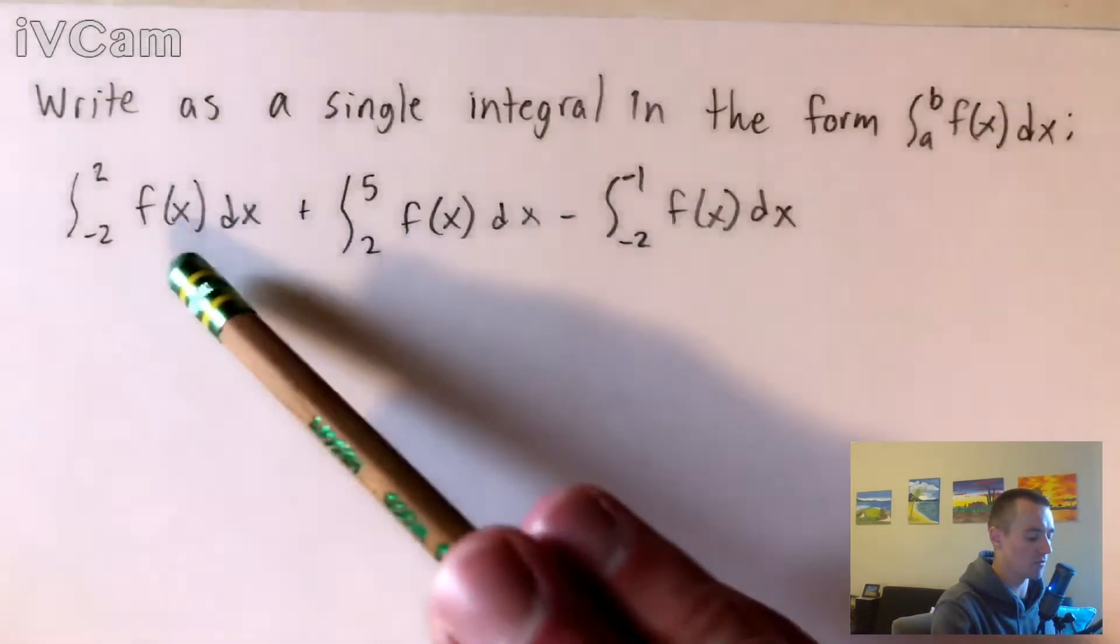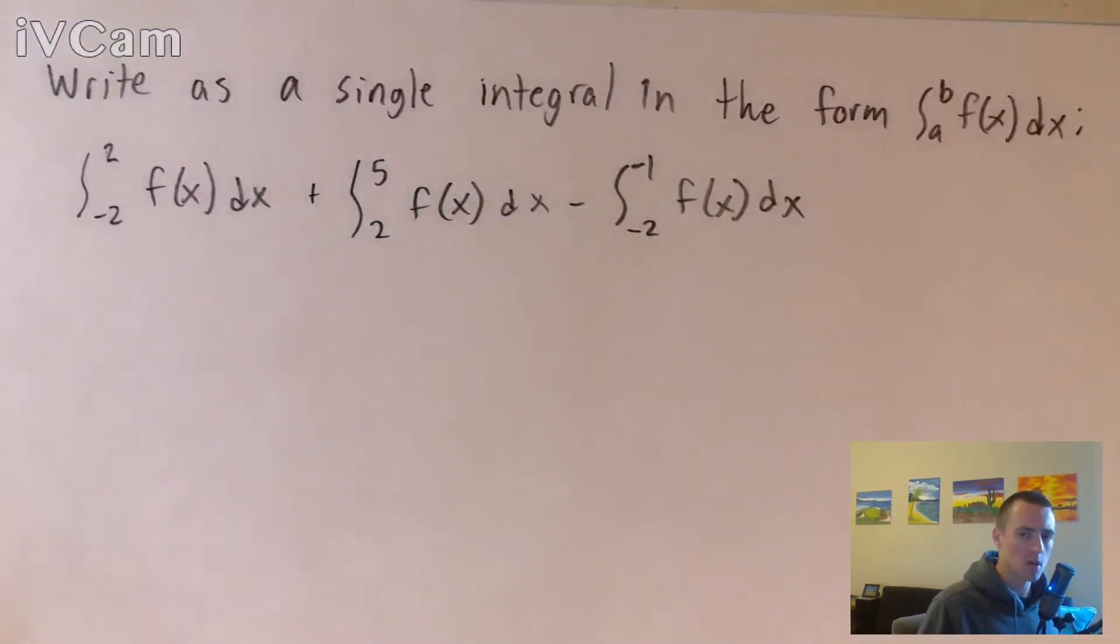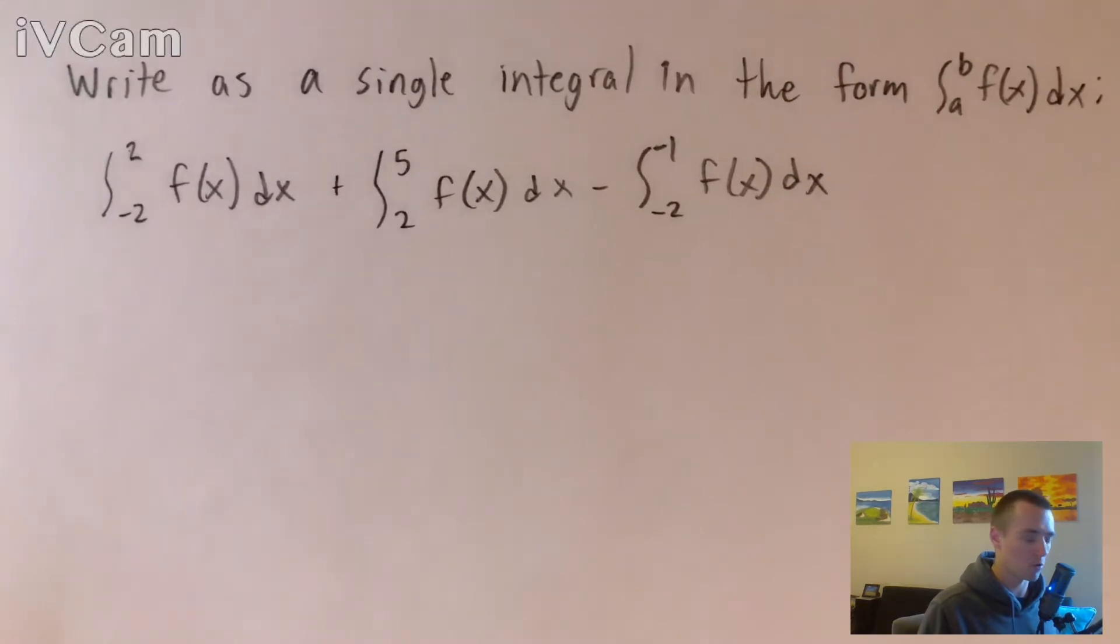Since we have the integral of f(x) three times, the only difference between these is their bounds. So we're going to use those definite integral properties to combine them into one single integral.